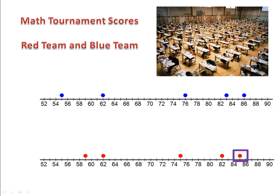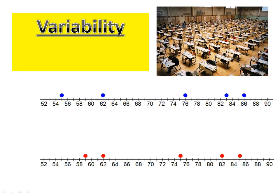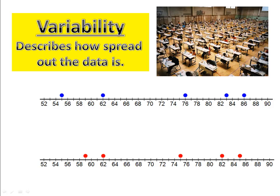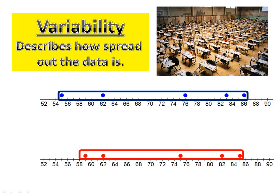How do these two sets of data compare? Today we're going to talk about variability. Variability simply describes how spread out the data is. The closer the data, the less variability. Take a look at the scores. If we box them in, we see that the red box is much shorter than the blue box.